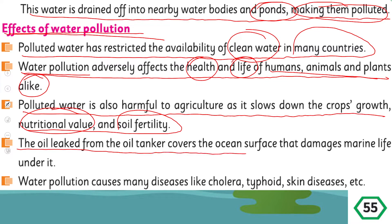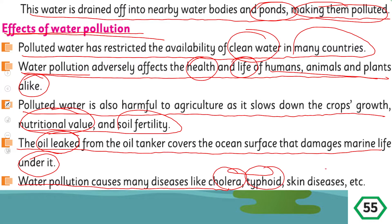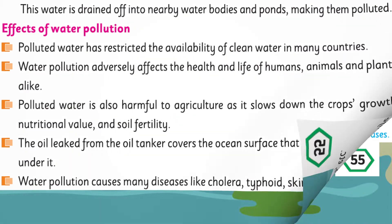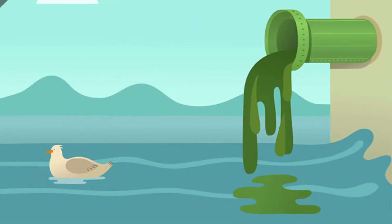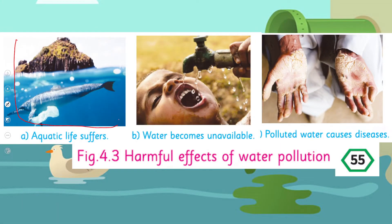The oil leaked from oil tankers covers the ocean surfaces and damages marine life under it. Jitna bhi oil tankers ya ships se oil jo hai agar leak ho jaata hai aur paani mein spill hota hai toh is ki wajah se underwater life ko bahut zyada threats ho jaate hain. Water pollution causes many diseases like cholera, typhoid, skin diseases, etc. Paani ki pollution ki wajah se bohut saari diseases hoti hain jismein cholera, typhoid aur skin diseases hain.